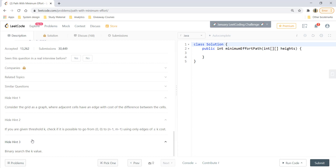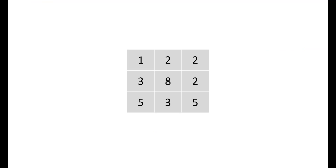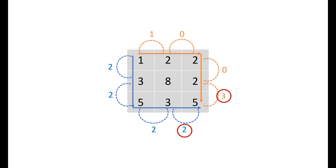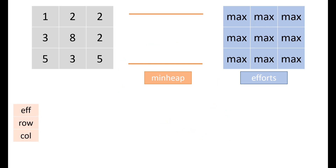We'll first apply Dijkstra's algorithm, which finds shortest paths in a weighted graph. We take an efforts matrix initialized to the maximum integer value and a min-heap (priority queue). Starting from (0,0), we always process the cell with the minimum current effort, updating neighbors, until we reach the final cell and return its effort value.